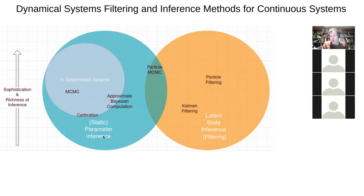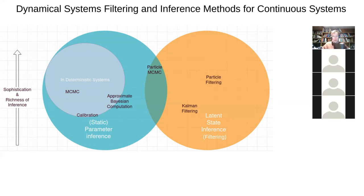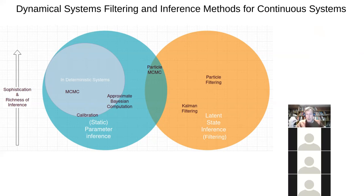By doing parameter inference we can better assess trade-offs between interventions or better know where the system is headed over the coming weeks and months. This is the problem of static parameter inference, and we began with the most basic approach for pursuing that calibration — trying to zero in on the single most likely parameter vector that best allowed our model to reproduce patterns in the world.